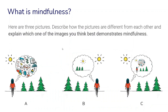Here's another way that we can approach our understanding of mindfulness. Here are three pictures — A, B, and C. First, stop the video and look at the pictures, describe what is going on in these scenes and how they are different from each other, then decide which of the images you think best demonstrates mindfulness and why you think so.